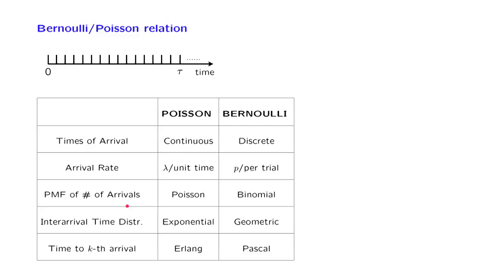Then we looked at the time until the first arrival, or the time between consecutive arrivals. For the Bernoulli process, that distribution is geometric. For the Poisson process, that distribution is exponential. Note that in this instance we're dealing with a discrete random variable, but here with a continuous random variable.